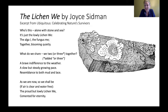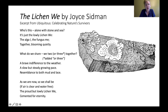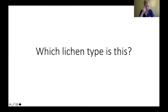Here's a poem I love to bring into any lichen talk, by Joyce Sidman from a book called Ubiquitous: 'Who's this, alone with stone and sea? It's just the lonely lichen, we — the alga, the fungus, me — together bloom quietly. What do we share, we two or three together? A brave indifference to the weather, a slow but steady growing pace, resembles both mud and lace. As we are now, so we shall be, if air is clear and water free, the proud but lowly white lichen we, cemented for eternity.'